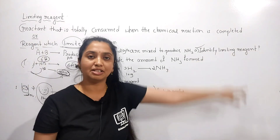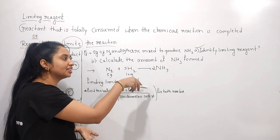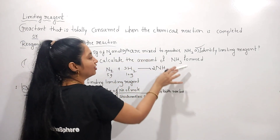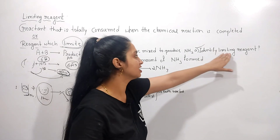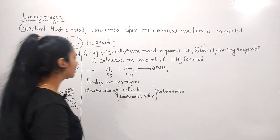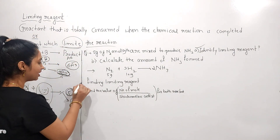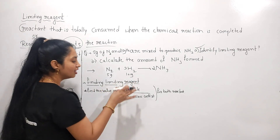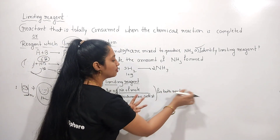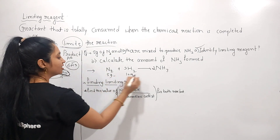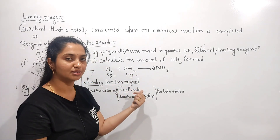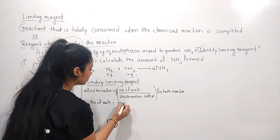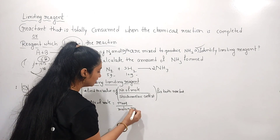We need to identify whether hydrogen or nitrogen is the limiting reagent. Without finding the limiting reagent, we can't calculate the amount of ammonia formed. The first step is to find the value of number of moles divided by stoichiometric coefficient for both reactants. They haven't given us moles directly — they've given mass. We know the formula: number of moles = mass divided by molar mass.